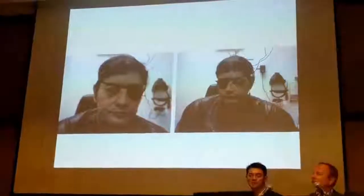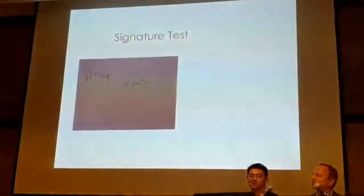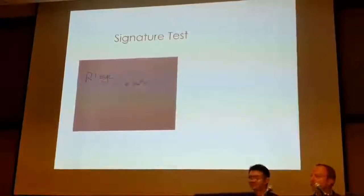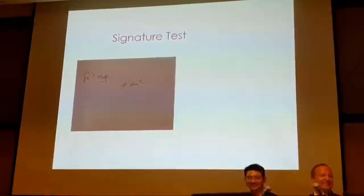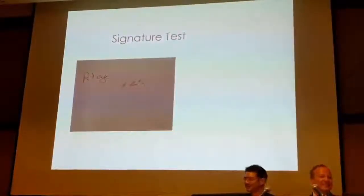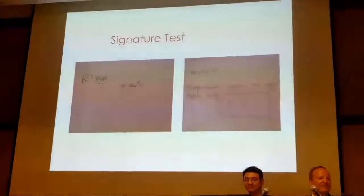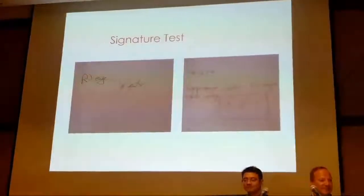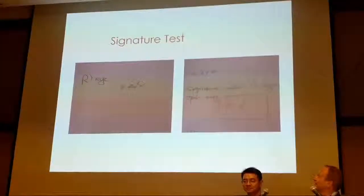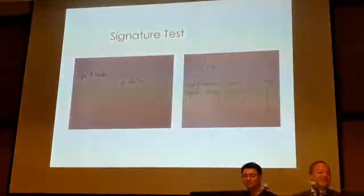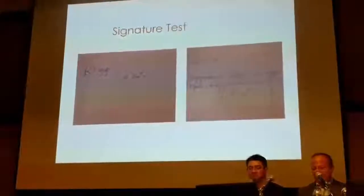Another very good test based on proprioception is the signature test. You can close your eyes and sign — just be careful what you sign on. This patient signed his name with no problem with the right eye, but with his left eye he signed it very bizarrely. That is another test where you can see that something's not adding up — they're either trying to demonstrate or mask something.